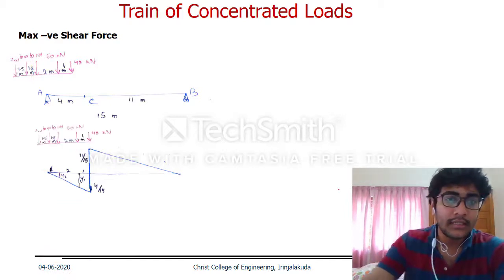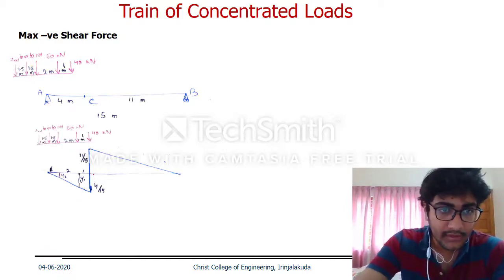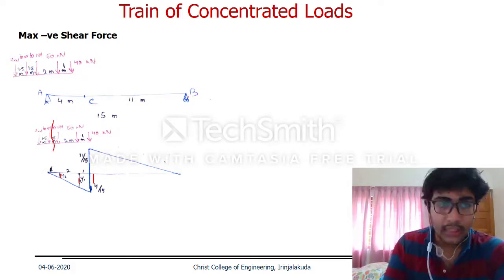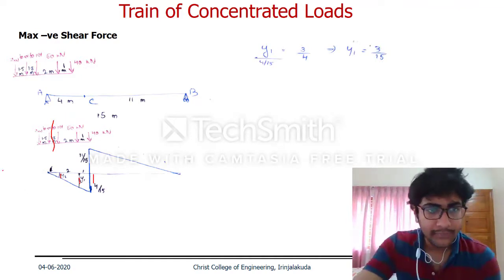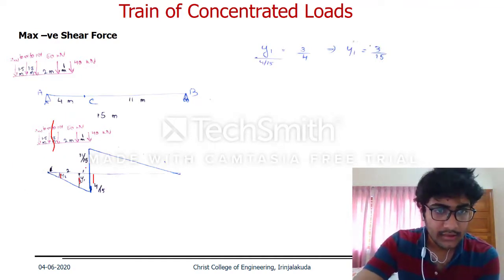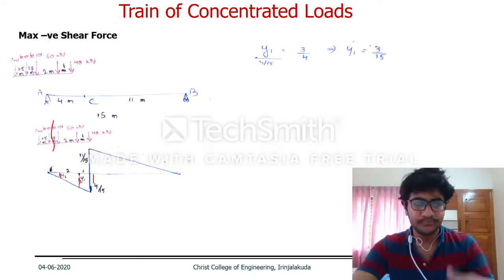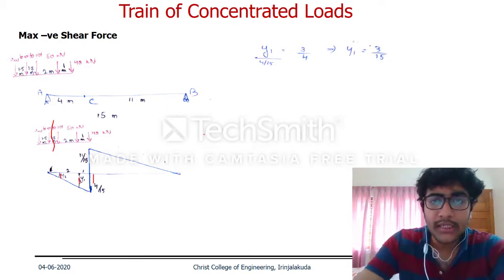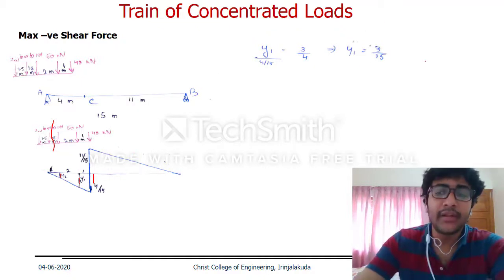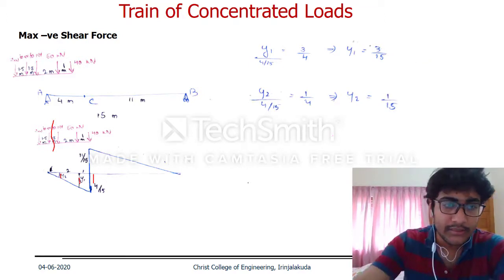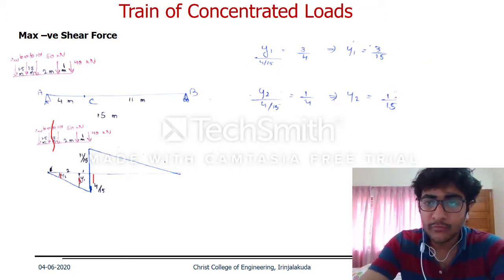The 40 kN load is 1 meter away, the 50 kN load has a corresponding ordinate y1. Similarly, 60 kN has a corresponding ordinate y2. The 120 kN load is outside the beam. Now we have to calculate using the ordinates from similar triangles.